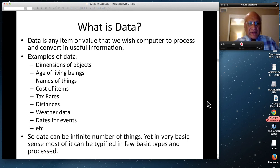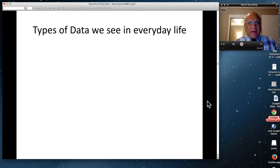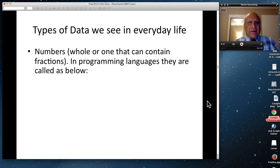Basically data can be infinite number of things, but in very basic sense, most of it can be typified into few basic types, and then we can process them inside the computer. If it was infinite type, we probably could not use computer to process infinite types. So we did that they are reducible to certain fixed number of types, and thus processable. Types of data we see in everyday life are classifiable as follows. You have numbers that can be whole numbers, or the other type that can contain fractions. Although fractional part sometimes can be zero.